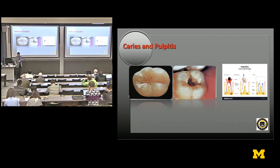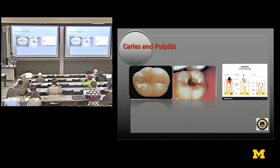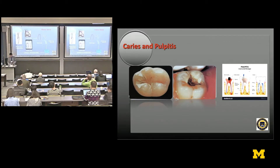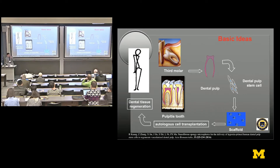We started thinking about how to apply those materials. We're now working on this for heart regeneration, tooth regeneration, and many other regeneration projects. This is just one example — in the dental school, they want to regenerate teeth. A student worked on getting stem cells from the wisdom tooth, mixing them with those spheres, and then injecting them back to repair tissue.